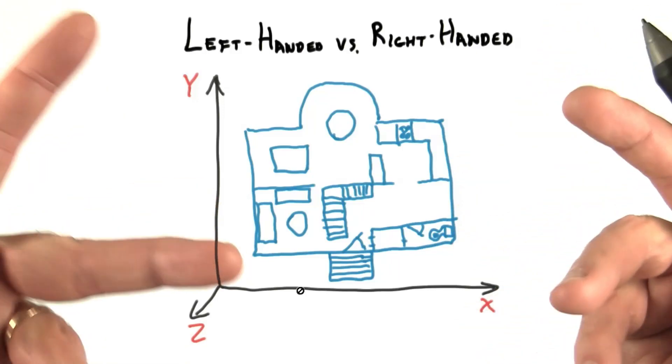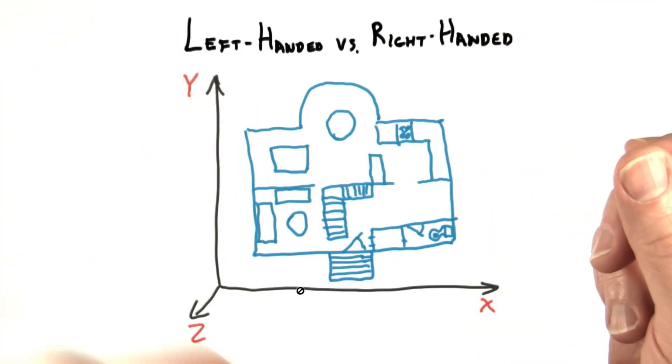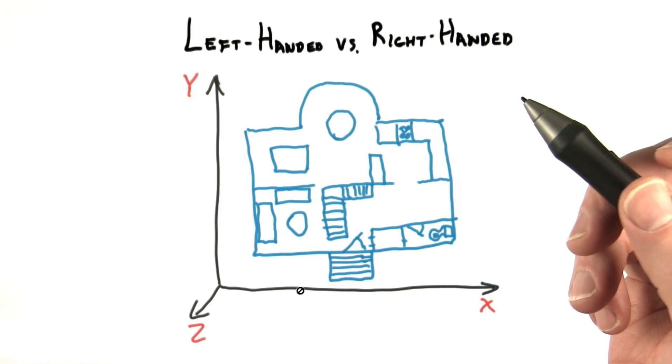Just like your right hand and left hands both have five fingers but look different, coordinate systems also have an orientation to them.